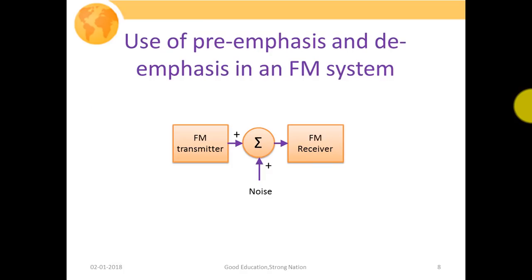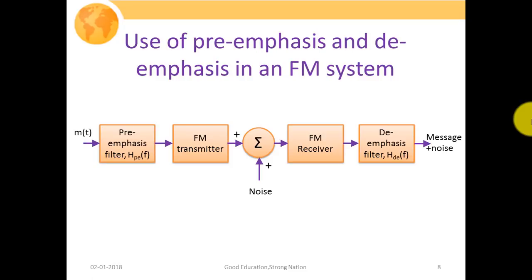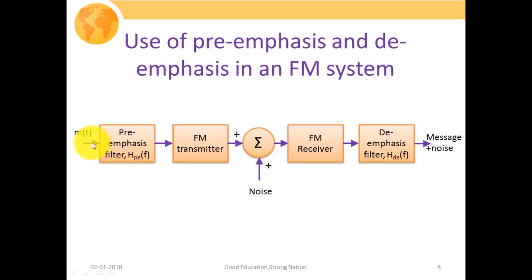So what we are going to do in pre-emphasis and de-emphasis in the FM system is: suppose we have an FM transmitter, and here is the channel which is the main source of noise where we get additive white Gaussian noise, and at the FM receiver we are trying to demodulate our FM signal. We are going to use a filter at the transmitting side called the pre-emphasis filter, and a filter at the receiving side which performs the inverse operation of the pre-emphasis filter. Here H_PE(f) is the transfer function of our pre-emphasis filter. Initially we apply message signal m(t) which passes through the pre-emphasis filter, then through the FM transmitter.